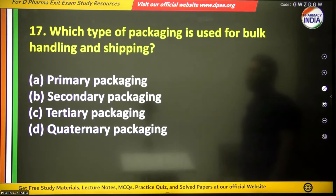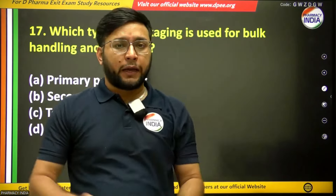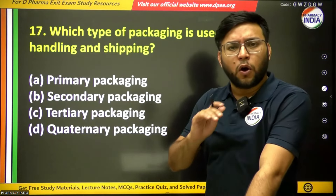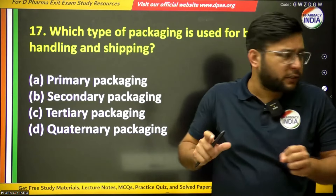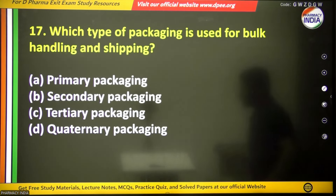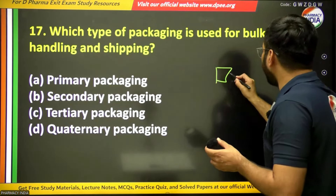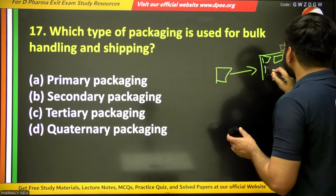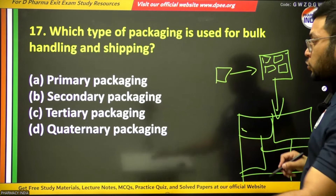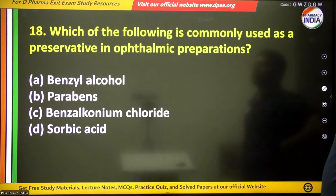The seventeenth question: which type of packaging is used for bulk handling and shipping? Primary packaging directly contacts the product — for example, packing a microphone in a box. Secondary packaging is that box placed inside another box. When those boxes are packed inside a large box for bulk shipping, that is tertiary packaging. So the answer is tertiary packaging.